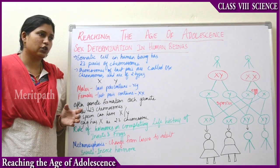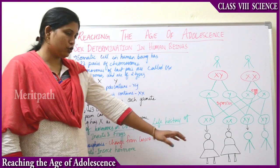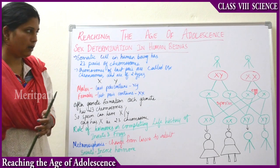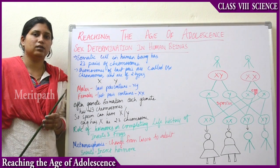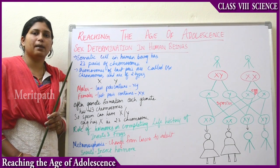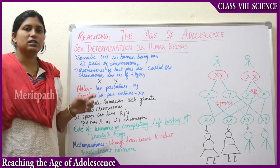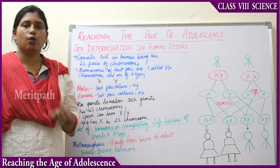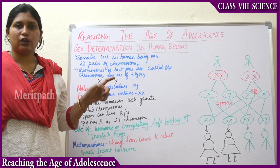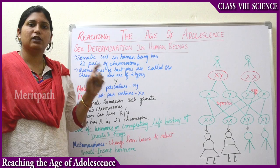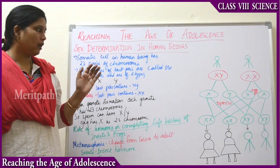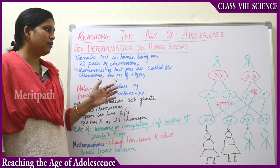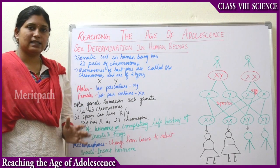When X and Y meet, then it is XY — a boy. When X and X meet, then it is XX — a girl. In males the last pair of sex chromosomes is X and Y, and in females the last pair contains X and X.